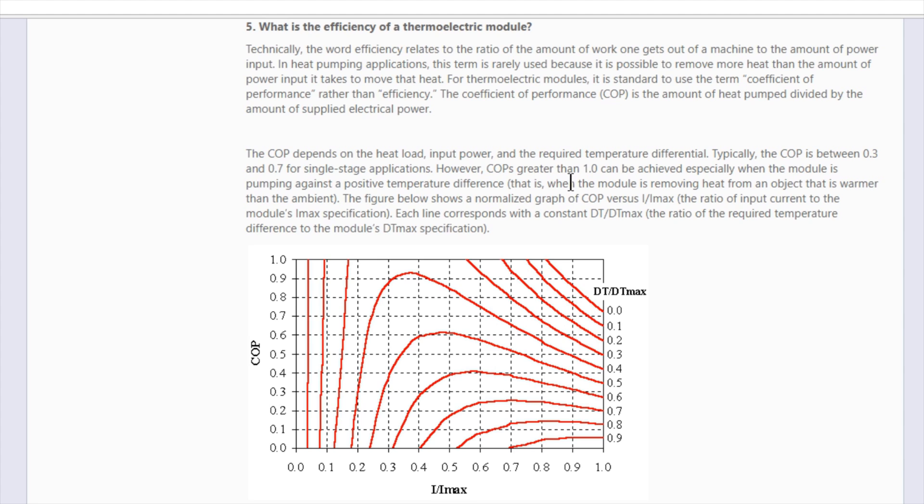The figure below shows a normalised graph of COP versus IMAX, that's amps. The ratio of input current to the module's IMAX specification. Each line corresponds with a constant DT temperature difference. The ratio of the required temperature difference to the module's DTMAX specifications.